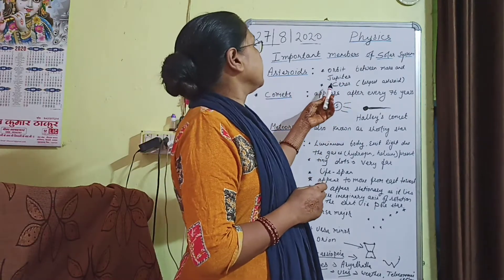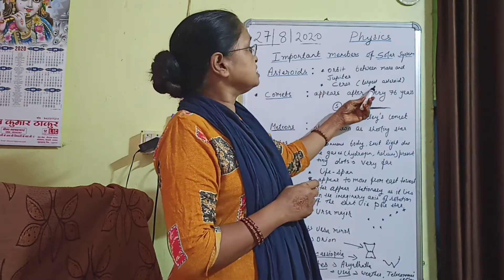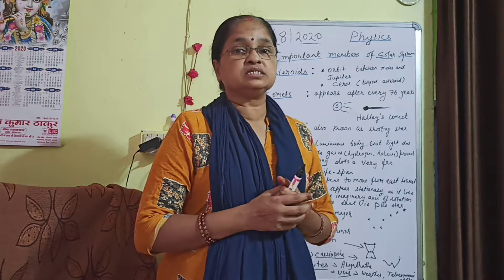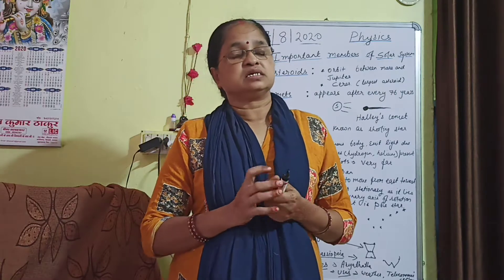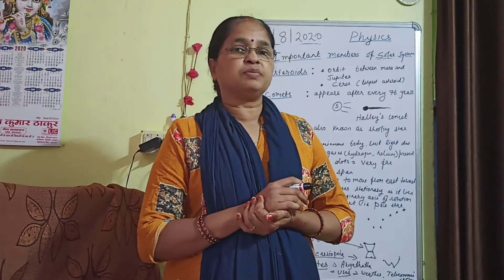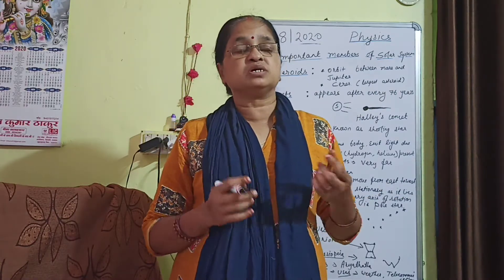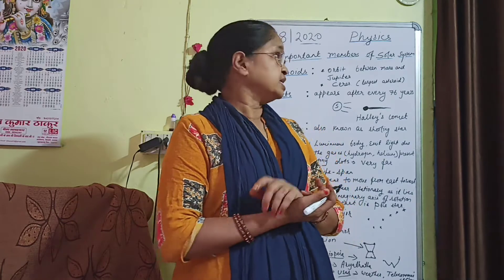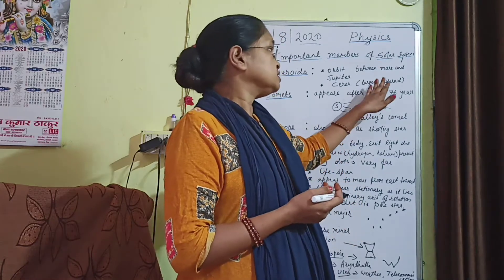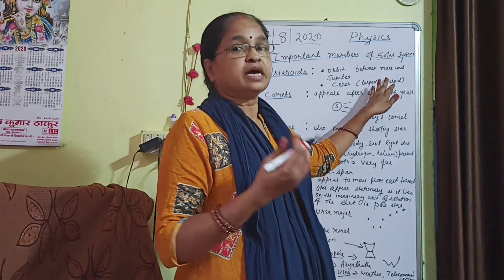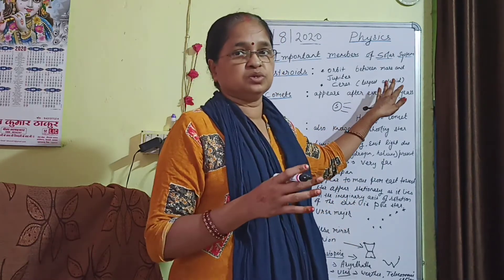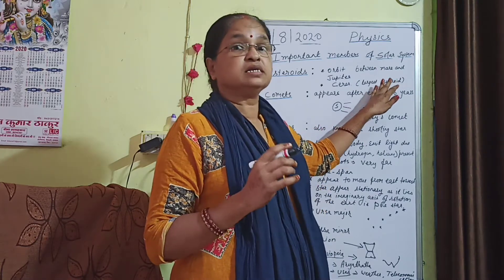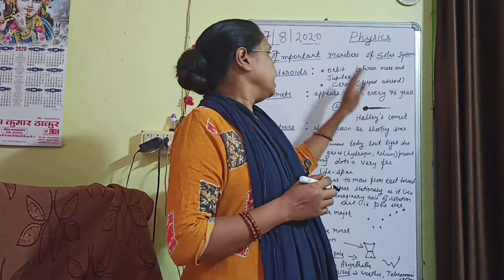The largest asteroid is named Ceres. It is also known as a minor planet because it has a natural satellite, like a moon. That's why it is known as a minor planet.